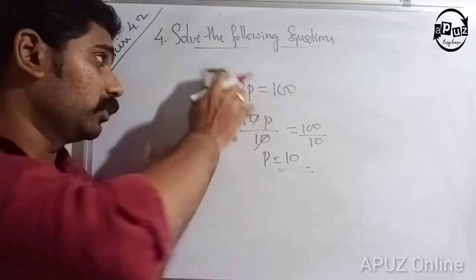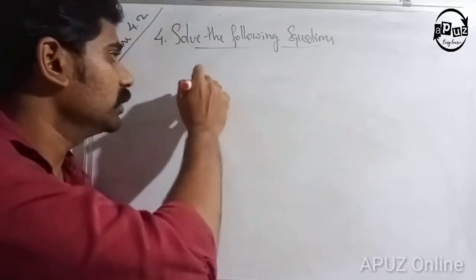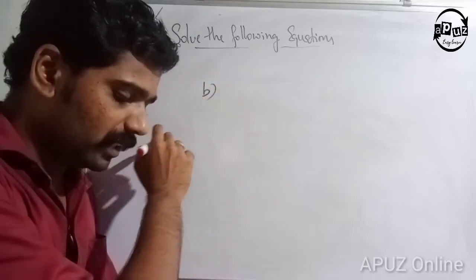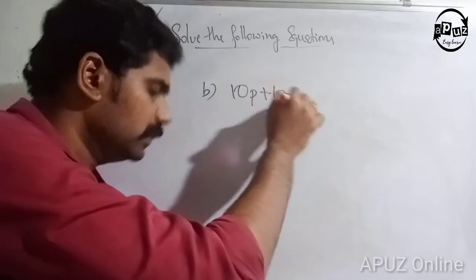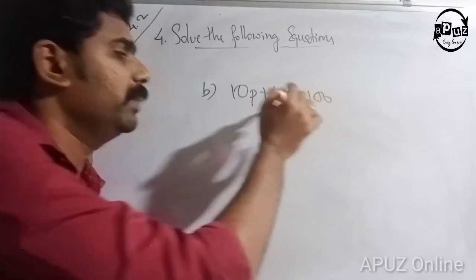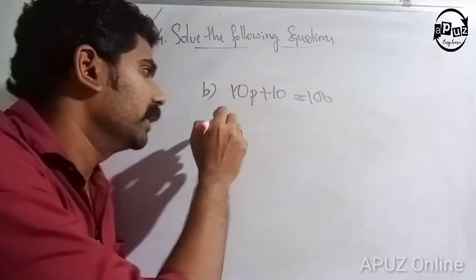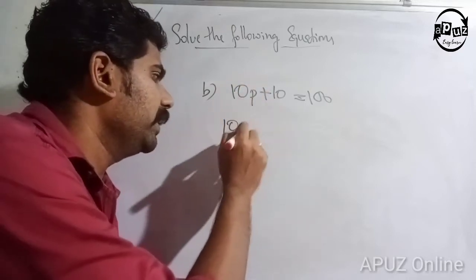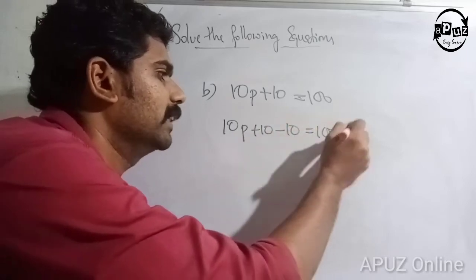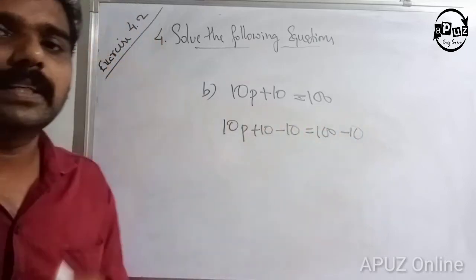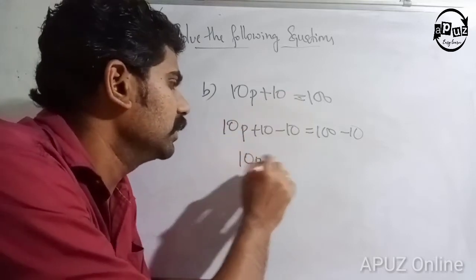Second question: 10p plus 10 is equal to 100. Subtract 10 from both sides: 10p plus 10 is equal to 100 minus 10. That is 10p is equal to 90.